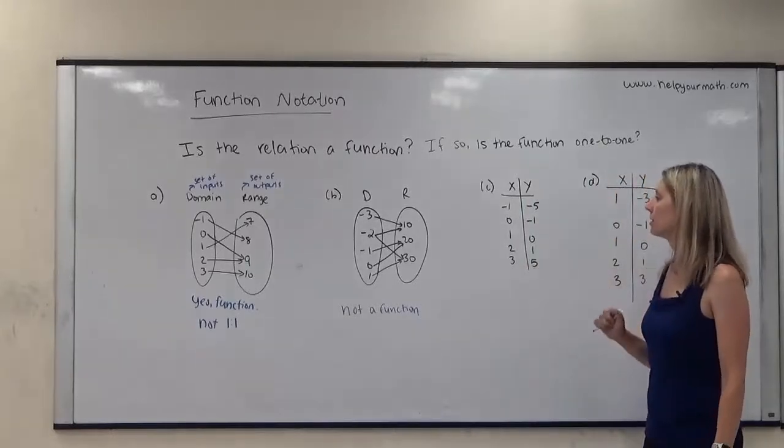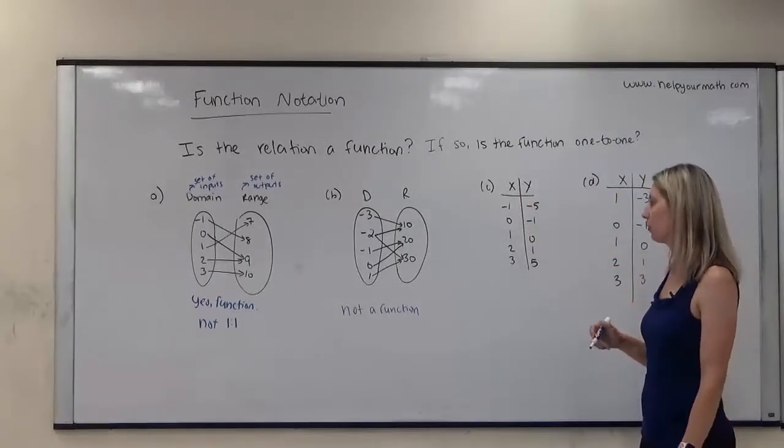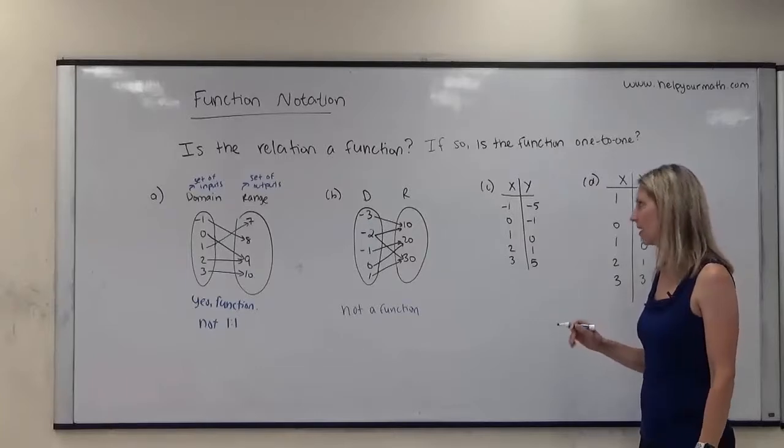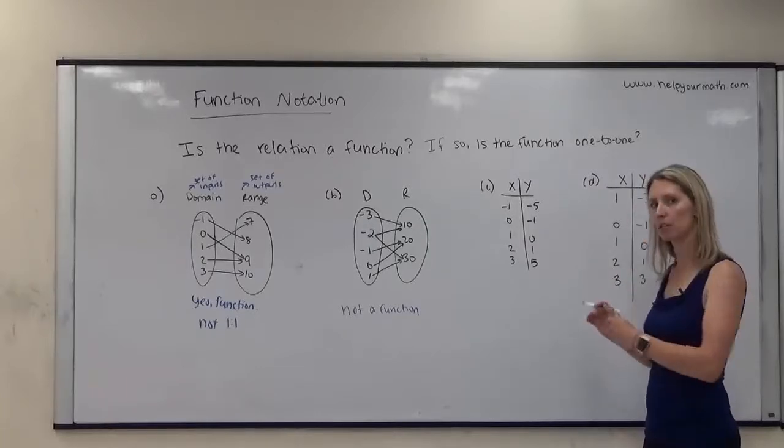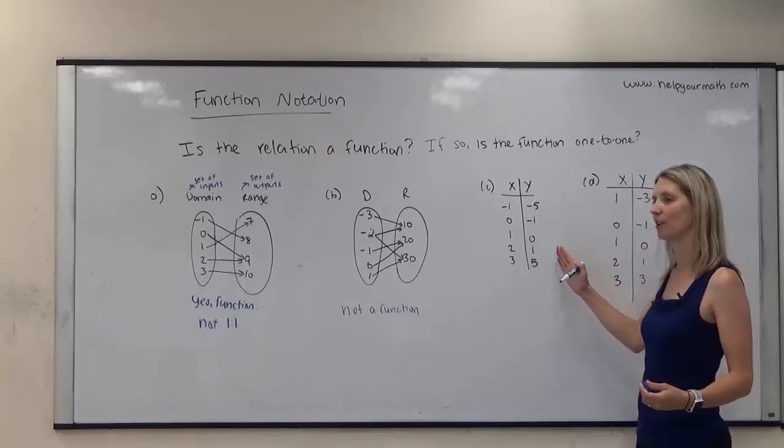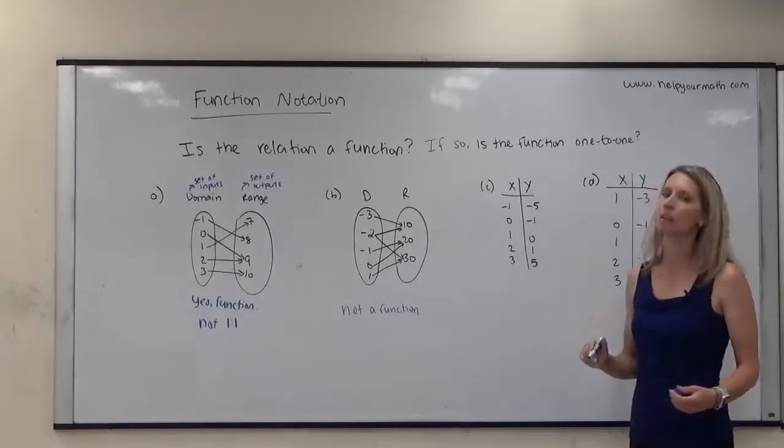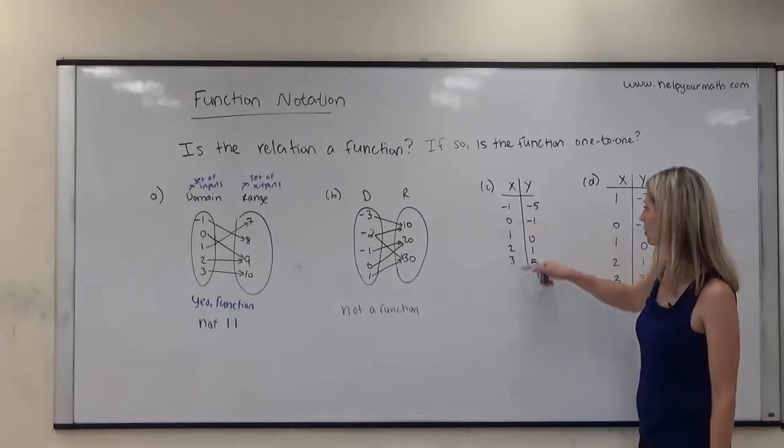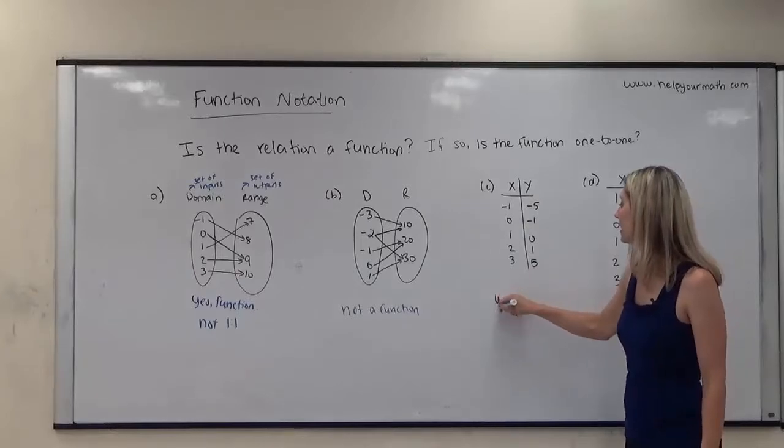Next, we're given a table of values. In this table of values, our inputs are negative one, zero, one, two, three. I don't even have to look at the outputs to determine whether something's a function or not. As long as there is an output, and all of these are unique, then we are dealing with a function, which these are all unique. So we would say, yes, function.